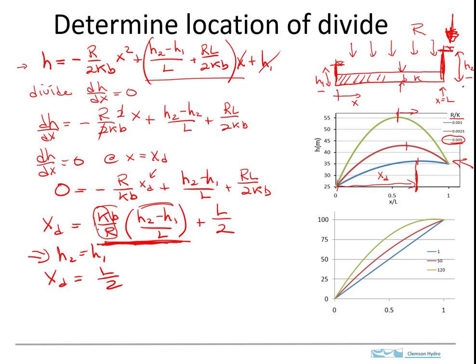As K over R increases, XD moves over towards the upstream side. That's what we saw here. This blue curve is for R over K of 0.001, and this one is 0.005.